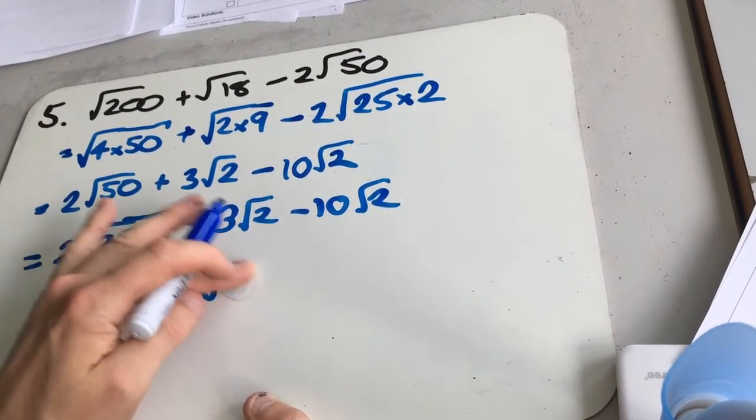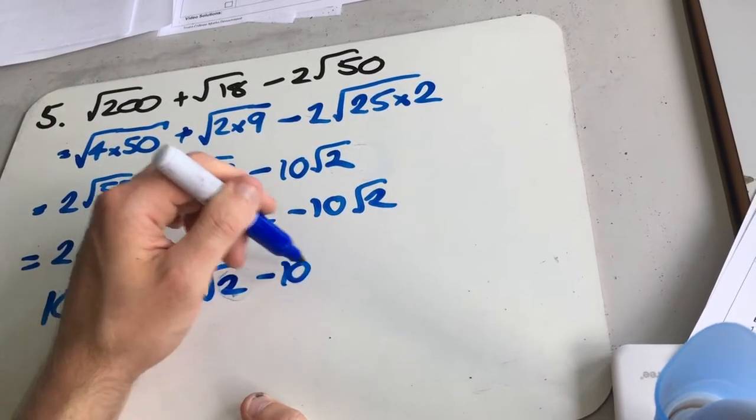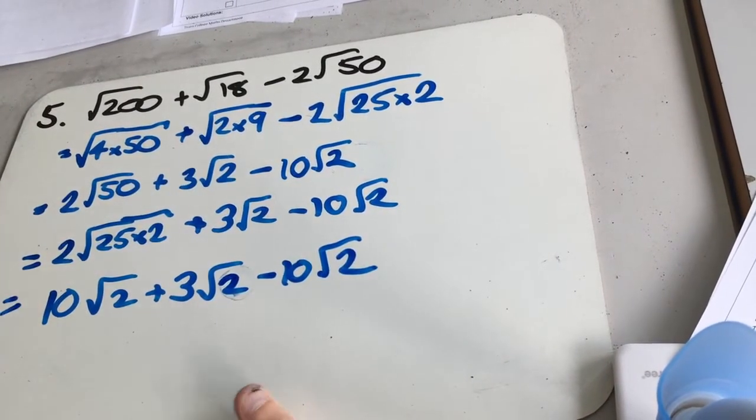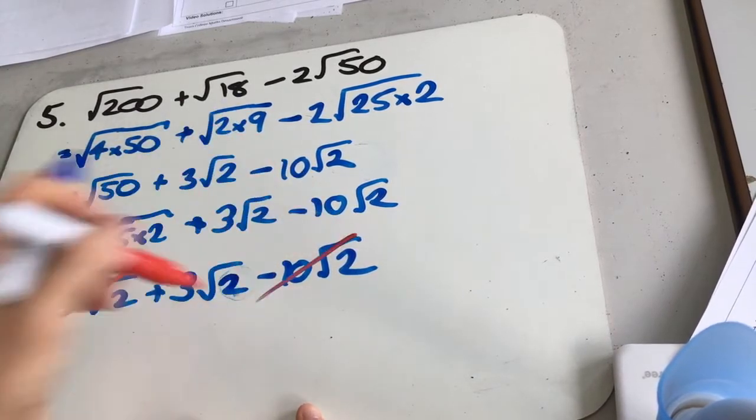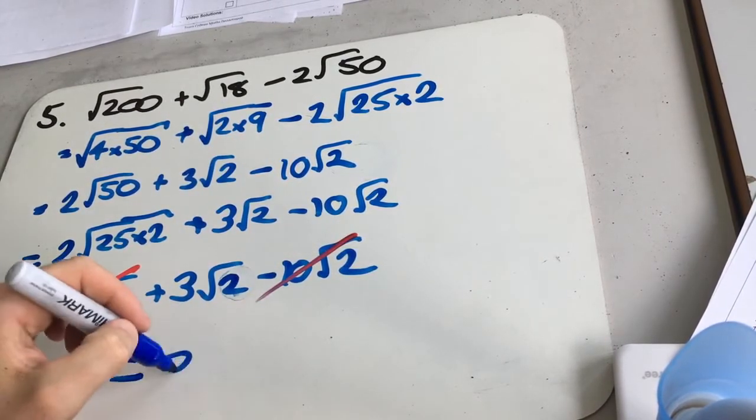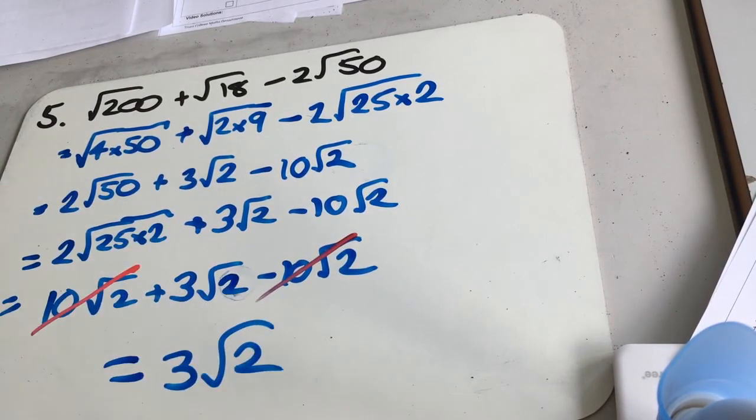Minus 10 root 2. The 10 root 2s there are going to cancel, leaving us with 3 root 2.